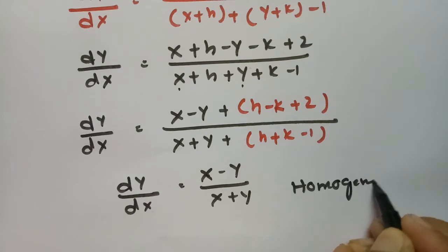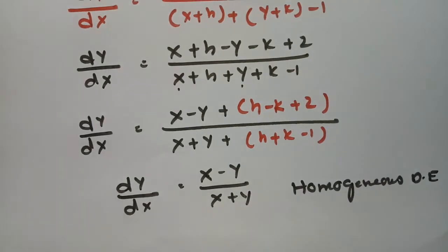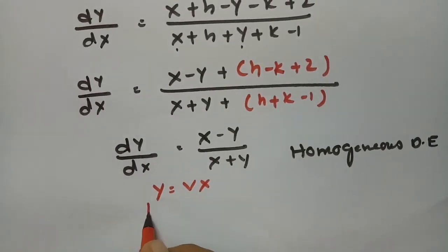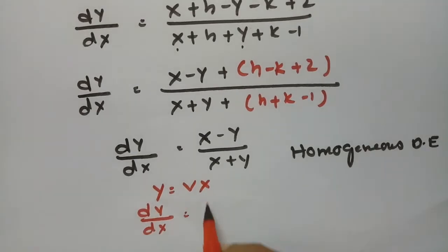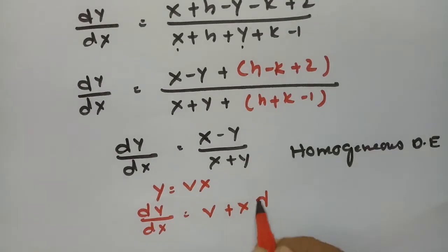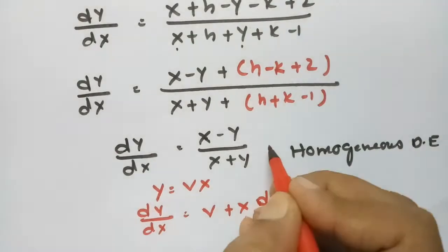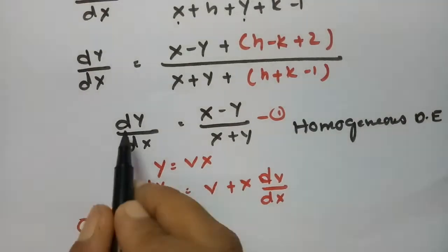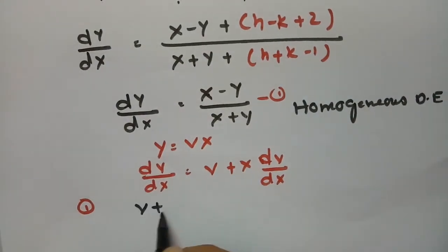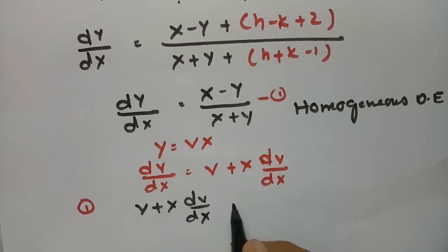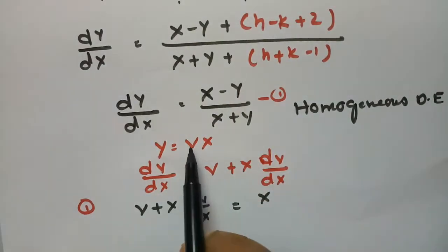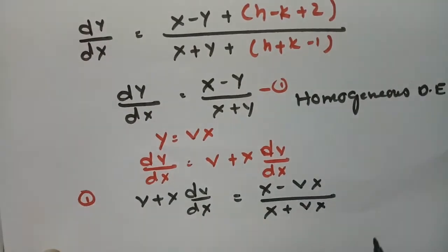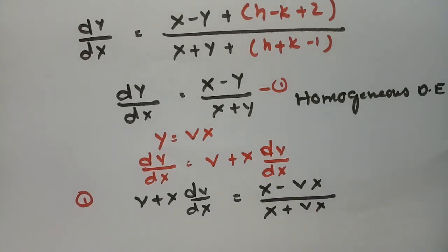For a homogeneous differential equation, we use the substitution y = vX. Differentiating both sides with respect to X gives dy/dX = v + X·(dv/dX). Substituting into the equation, in place of Y we write vX, giving v + X·(dv/dX) = (X - vX) / (X + vX).